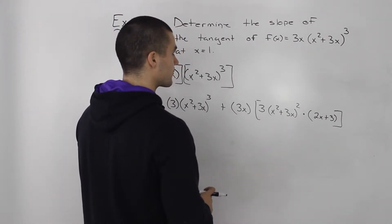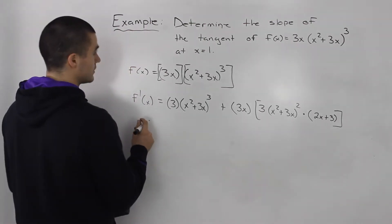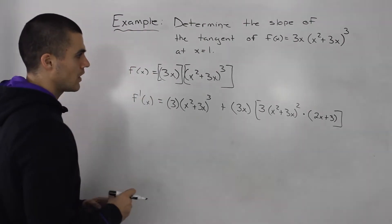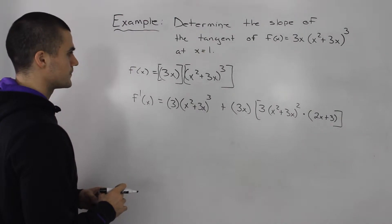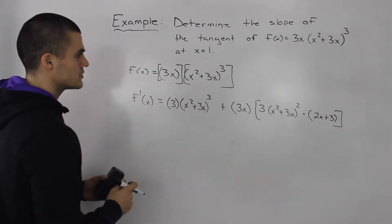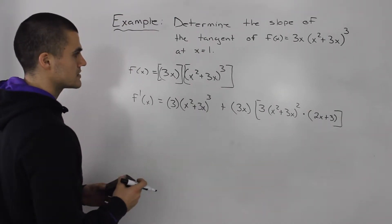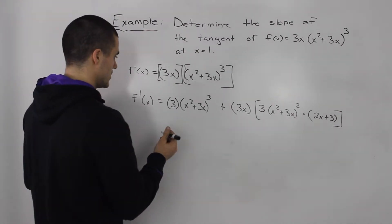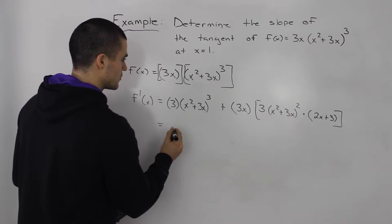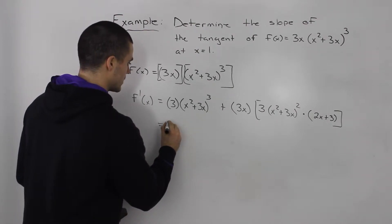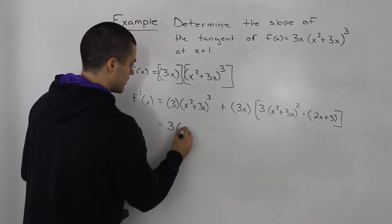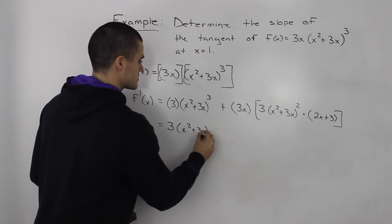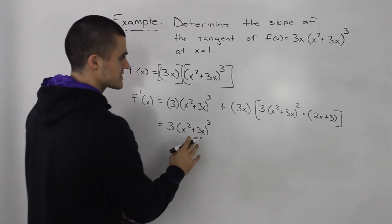At this point we want the slope of the tangent at x = 1. Depending on your teacher, they might want you to simplify this more. So let's go through that — it won't be too bad. We have (x² + 3x)³, which stays as itself.